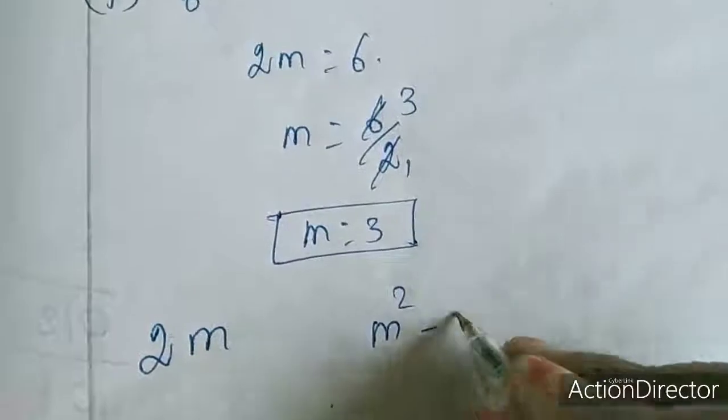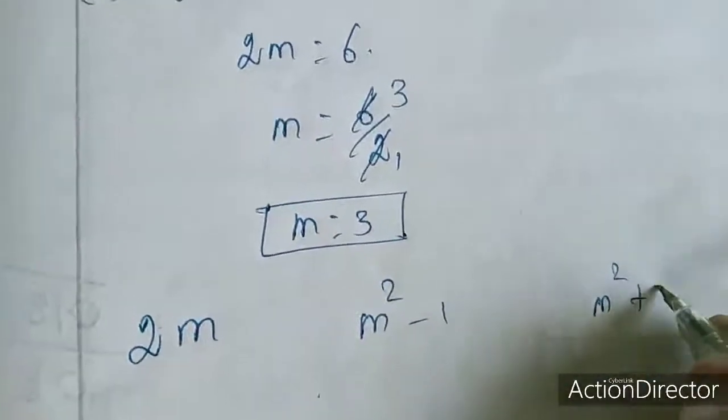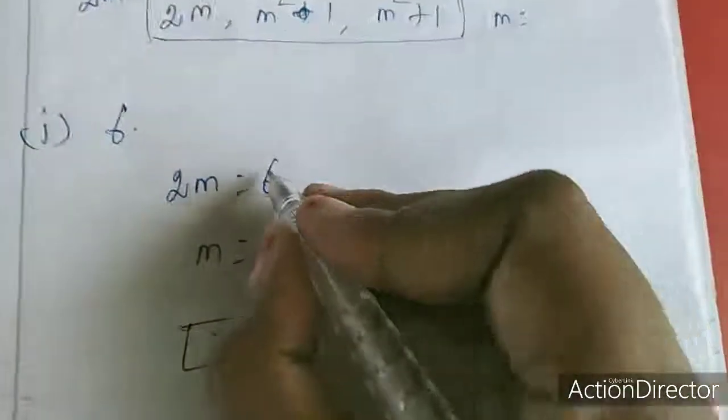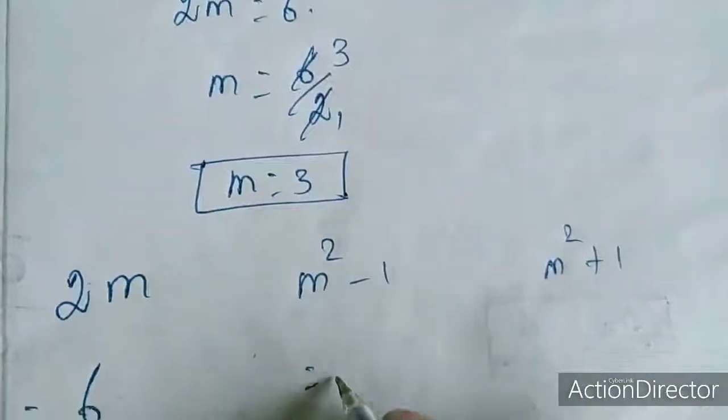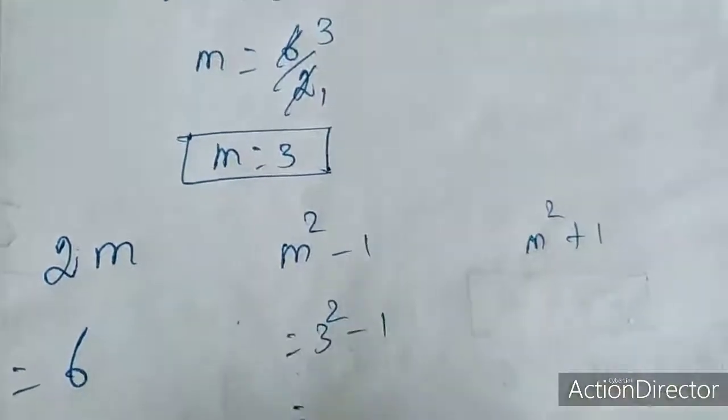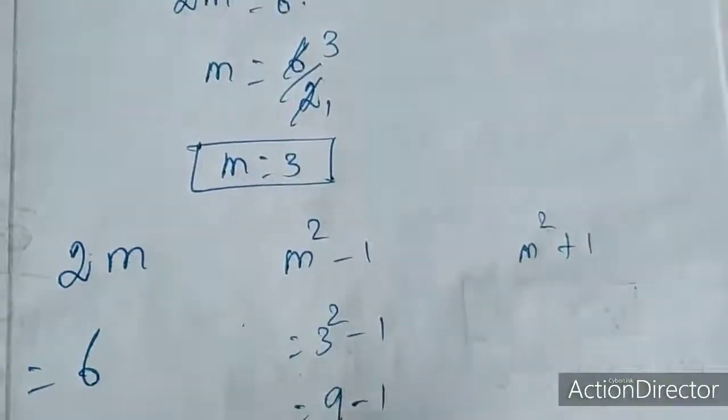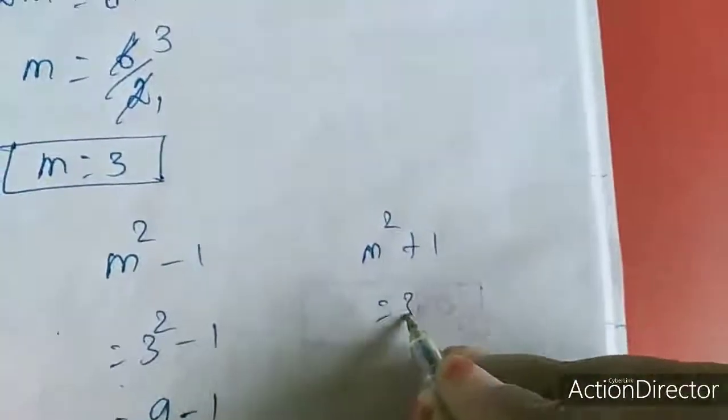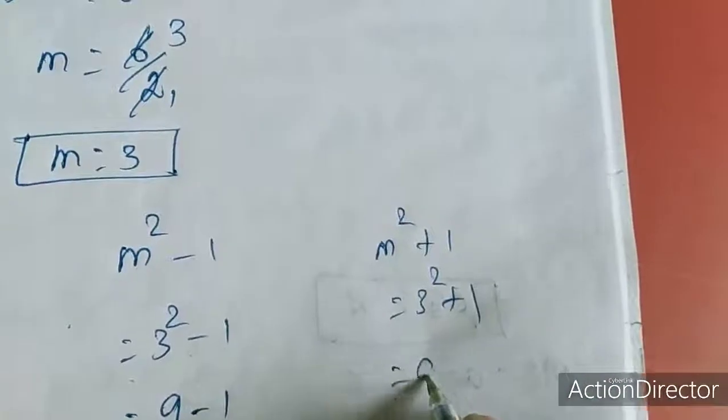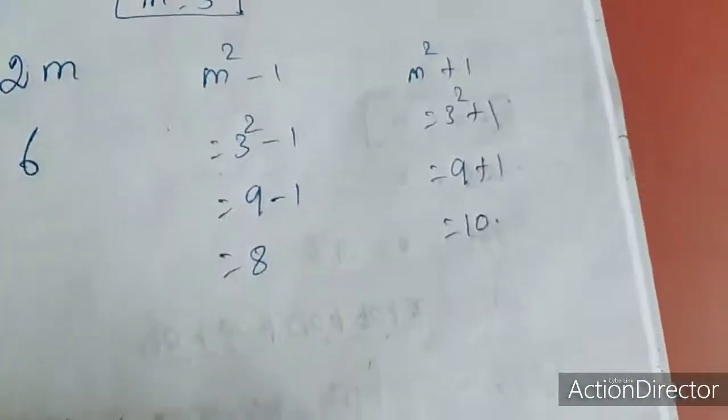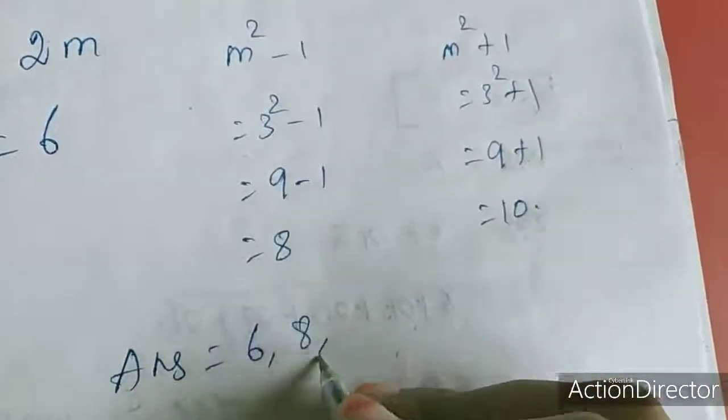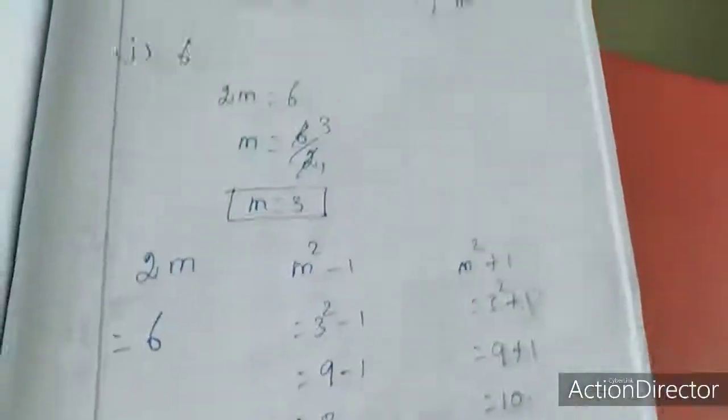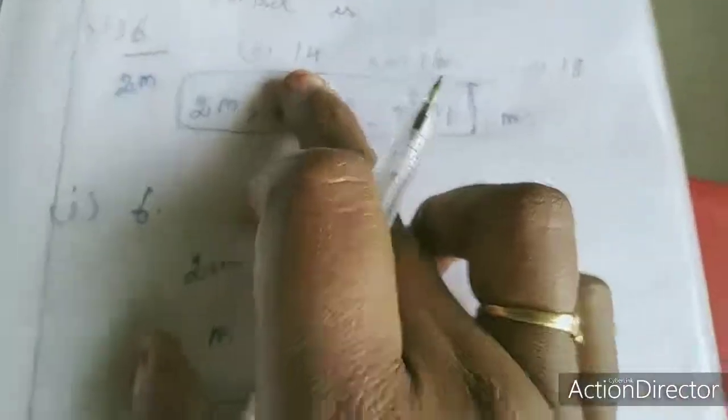What we want to find out? 2m, m squared minus 1, m squared plus 1. So 2m we already know is 6. M squared minus 1, so m squared means 3 squared minus 1, 3 squared is 9 minus 1, so 8. Here 3 squared plus 1, 9 plus 1, that is 10. So answer equal to 6, 8, 10.